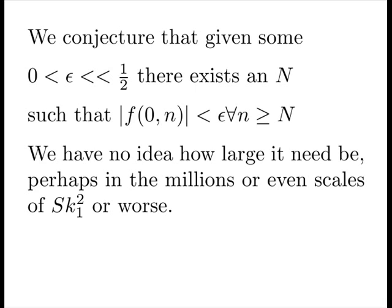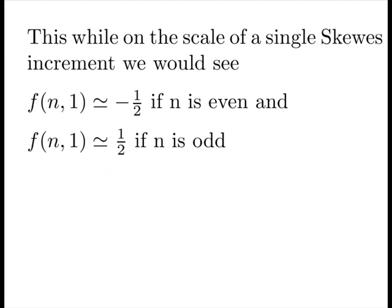We have no idea how large it need be, perhaps in the millions or even scales of skews numbers squared or worse or even maybe tiny. We don't know. This while on the scale of single skews increments, we should see it averages to minus a half or plus a half, depending if n is even or odd. So here's what we think is happening.